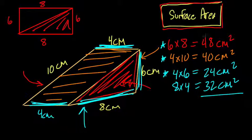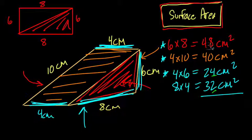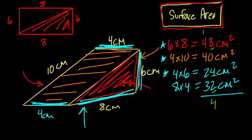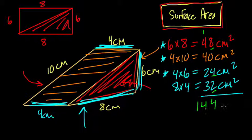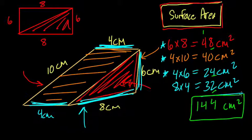If we add all of these up, we find the total surface area. So let's do that: 48 plus 40 plus 24 plus 32 equals 144 square centimeters. And that's our surface area. Thanks.